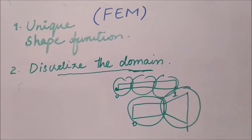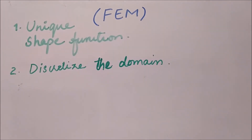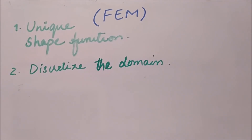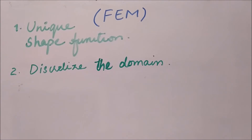These two points — unique shape function derivation and domain discretization — are what is different and unique in the finite element method. But there are also some points that are similar with the techniques we have covered, particularly through the one-to-one correspondence of FEM with the direct method.